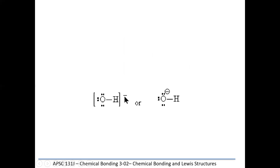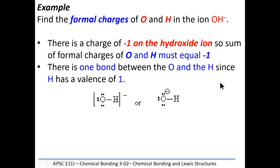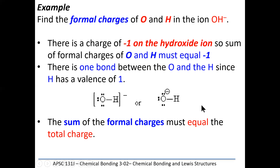Here we have hydroxide ion with an overall charge of -1. For oxygen: the two unshared pairs belong entirely to oxygen — that's four electrons — plus one from the shared pair with hydrogen, giving a total of seven electrons assigned to oxygen. Six minus seven equals -1, so oxygen's formal charge is -1. For hydrogen: it has one valence electron and gets one from the shared pair, so its formal charge is zero. When we add them up — minus one plus zero — it equals the overall charge of -1, confirming this is the correct Lewis structure.